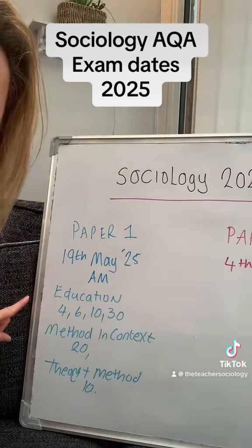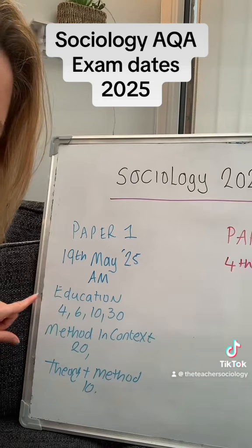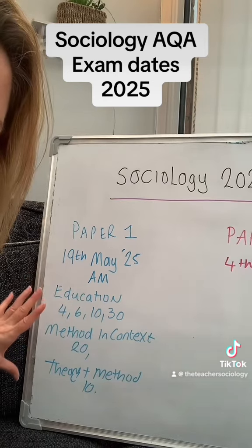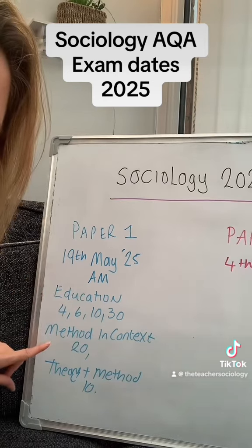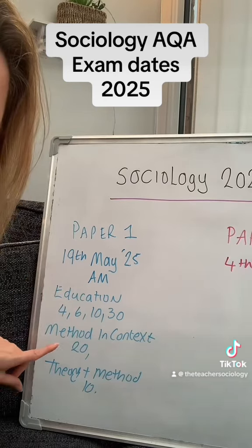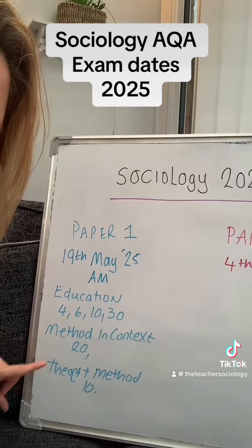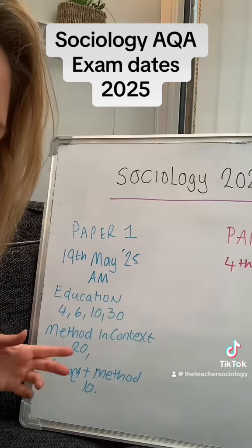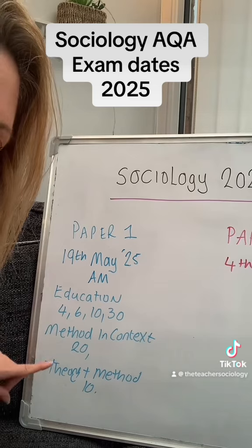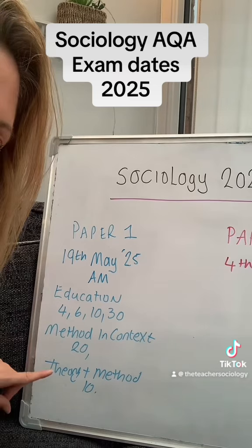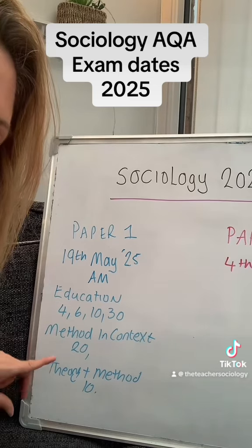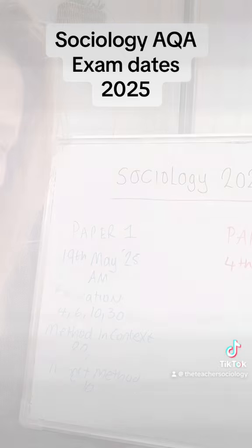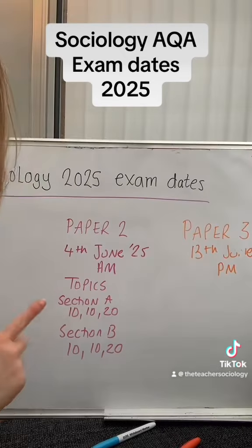We have four questions on Education solely — a 4 mark, a 6 mark, a 10 mark, a 30 mark, a 20 mark on a Method in Context (I'll do a TikTok explaining what that is), and then a 10 mark on a Theory or Method — it could even be a debate.